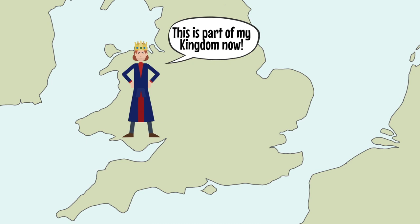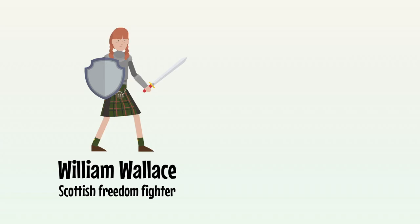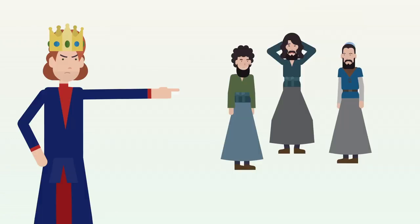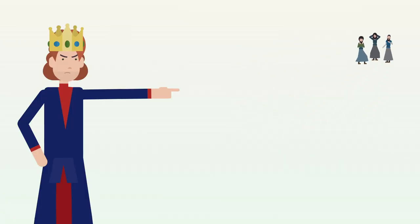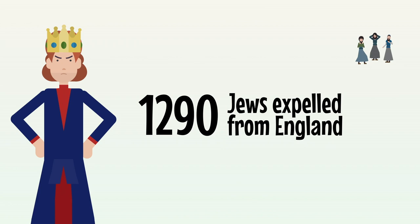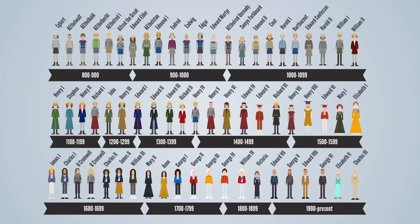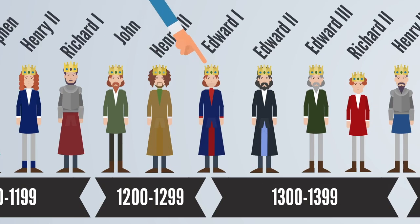He's best known for bringing the Welsh under English rule, and for having Scottish leader William Wallace — the subject of Mel Gibson's 1995 very, very historically accurate film Braveheart — executed, and for expelling all Jews from England, an edict that would only be officially overturned under Oliver Cromwell some 350 years later. He's here in our timeline, his rule beginning 750 years before the current King Charles III inherited the throne of England.